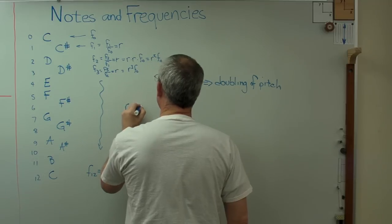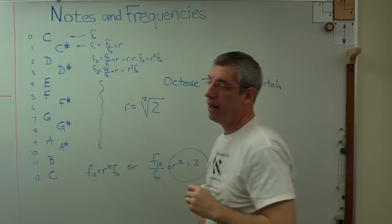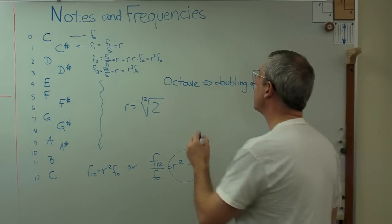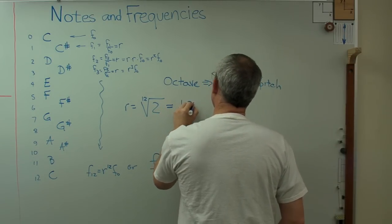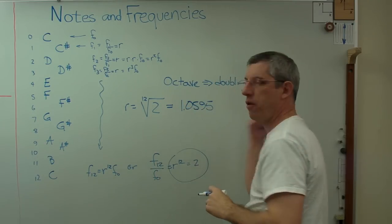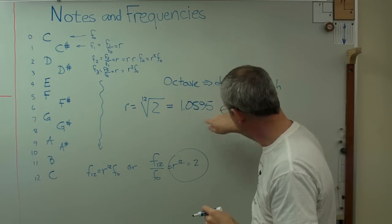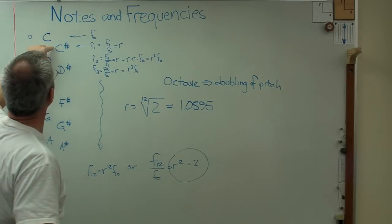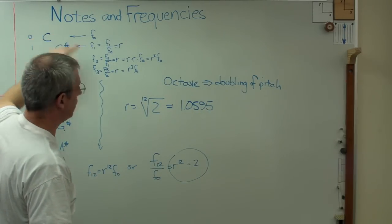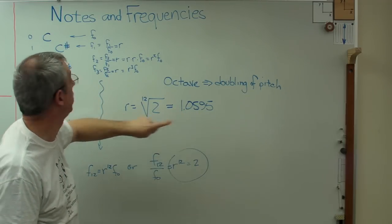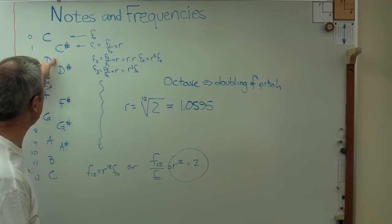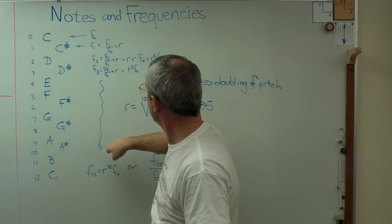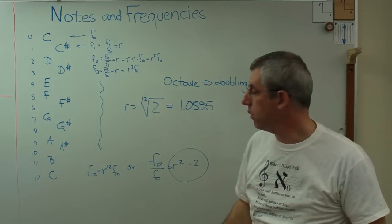So R equals the 12th root of 2. That's a strange number. That's not something you would have expected, perhaps. It's certainly not something I expected. When you work this out, you get 1.0595. It actually goes out farther than that, but that's 1, 2, 3, 4, 5 significant figures. That's plenty. So if I want to know F1, I multiply F0 by that number right there. If I want to know F2, I multiply that number by that number squared, and so on. So we've got everything defined in terms of R and F0, and we know what R is. There's only one problem here. What's F0?